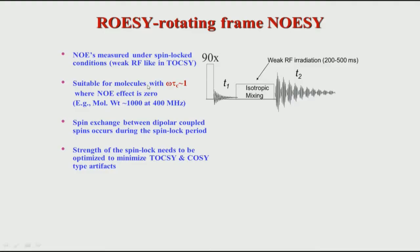As you can see in this slide, 2D ROESY means Rotating Frame NOESY — Rotating Frame Overhauser Effect Spectroscopy. So this is an alternative to the 2D NOESY experiment. Let us see how this works and why it is required.